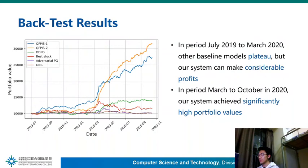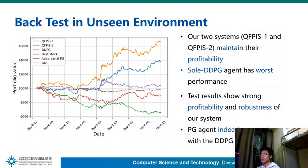The backtesting results are shown in the figure. In the first half period, almost all baseline models underperformed, but our system achieved considerable profits. In the second half period, our models witnessed a continuous increase. Although almost all baseline models are able to make profit, our system's profit achieved a significantly higher level, showing its profitability and robustness. To further test robustness, we selected nine other unseen products for backtesting. Our two models maintained their profitability, whereas the sole DDPG agent performed worst among all models. This comparison shows that the PG agent indeed cooperates with the DDPG agent and prevents potential loss by closing orders at an appropriate time.